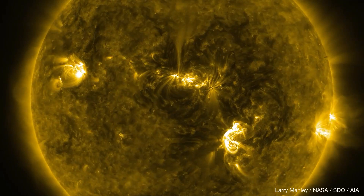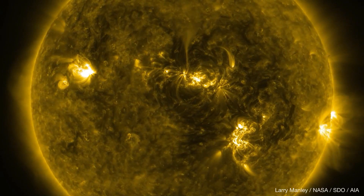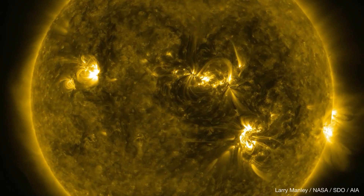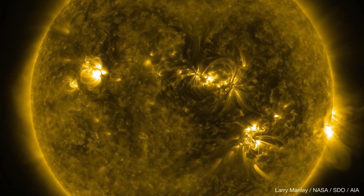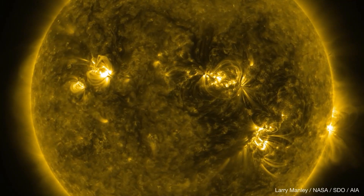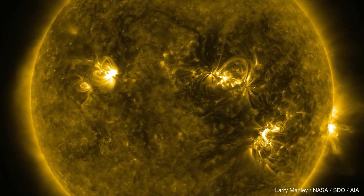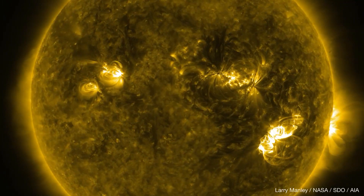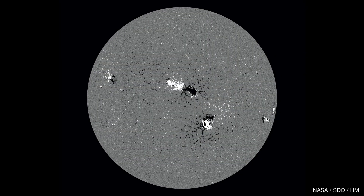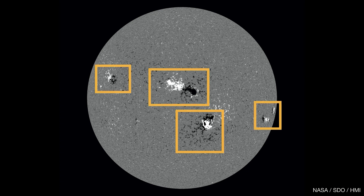The first thing to know is that the sun is flaring all the time — small flares are common, large ones like these are rare. And the second thing to know is that flares occur in active regions, or regions of strong, complex magnetic fields that evolve rapidly over time.